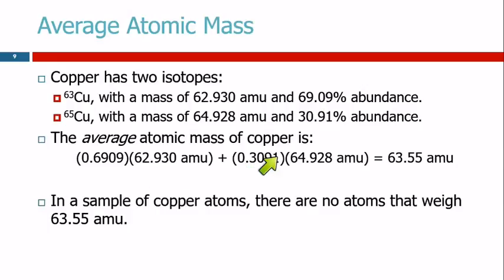And then you take the other percentage expressed as a fraction, 0.3091, you multiply by the atomic mass of that isotope, and you add these together, and you get 63.55. The average atomic mass of copper is 63.55 atomic mass units.